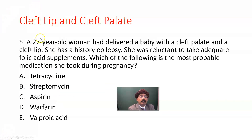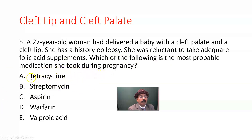Question five: A 27-year-old woman delivered a baby with cleft palate and cleft lip. She has a history of epilepsy and was reluctant to take adequate folic acid supplements. Which of the following is the most probable medication she took during pregnancy? A) Tetracycline, B) Streptomycin, C) Aspirin, D) Warfarin, E) Valproic acid. The answer is E, valproic acid.